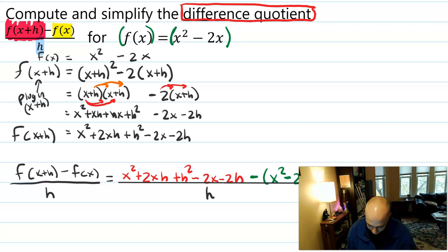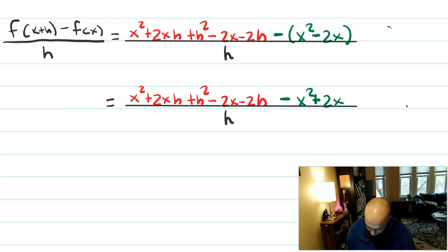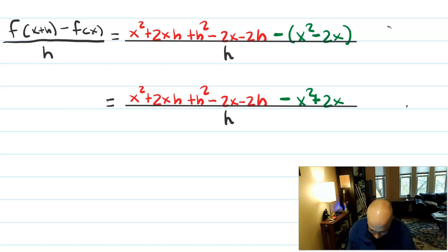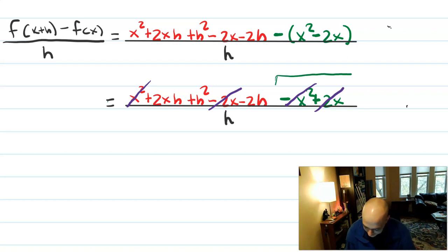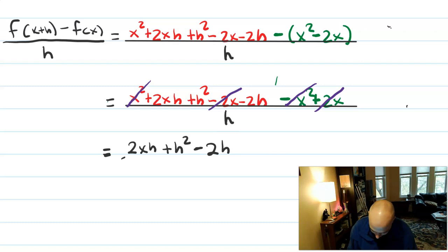We're not going to do anything with the h just yet. Now I'm going to simplify all of these terms. The first thing I'll do is distribute that negative on the x squared minus 2x, so this becomes minus x squared plus 2x. Now that the parentheses on the numerator are dealt with, I can start canceling. The plus x squared and minus x squared cancel; the minus 2x and plus 2x cancel. Almost always, everything in that second term cancels with something in the first term.